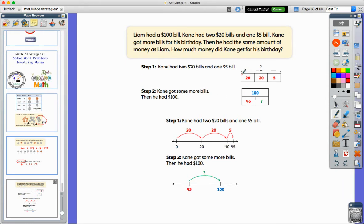You'll notice there's a step one and step two because there's actually two parts to this problem. We first have to figure out if Cain had twenty and five, which was 25 dollars, he got some more for his birthday. Now how much did he get? Because he has to get the same amount as Liam.